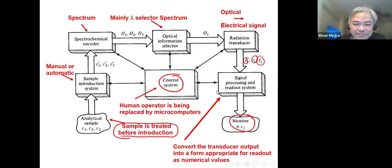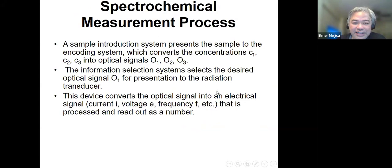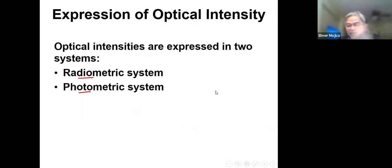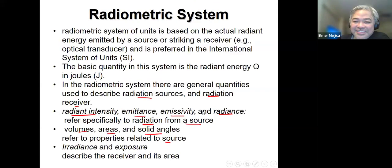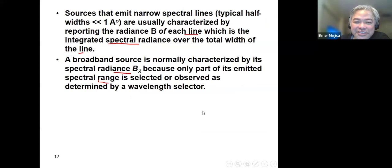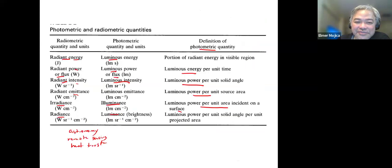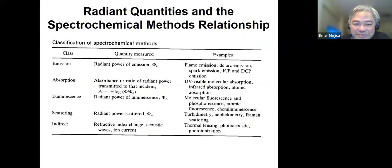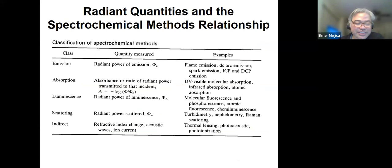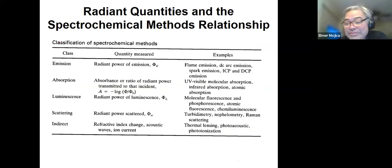I introduced to you how you do the spectrochemical measurement, and then I discussed how optical intensities are expressed. Now we're going to look at the spectrochemical measurement methods. There are five of them, and we look at them based on how the quantities are measured.